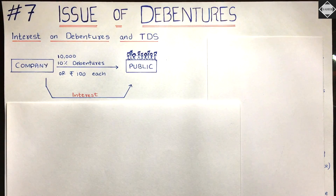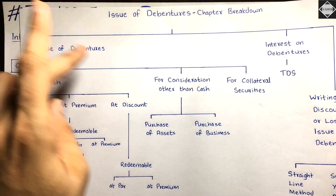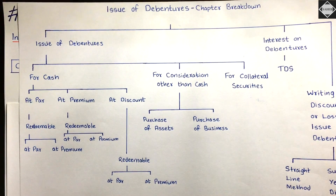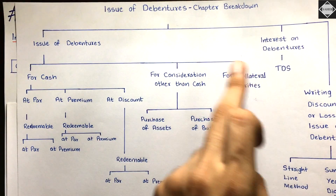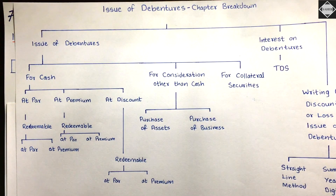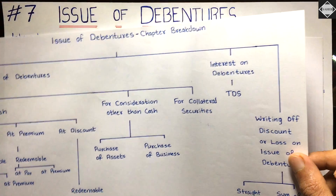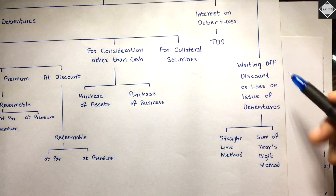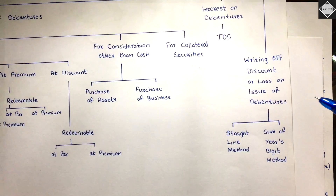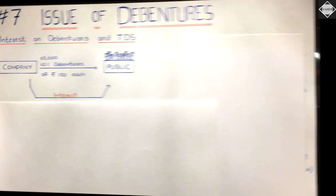Before going ahead with this video, please make sure you have watched the previous videos. We have covered issue of debentures for cash — six different cases — over subscription problems, collateral securities, and consideration other than cash. Now we are on this topic: Interest on Debentures and TDS. In the next video we will cover writing off discount or loss on issue of debentures.